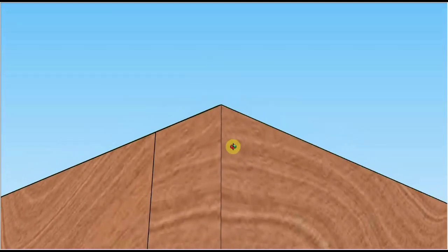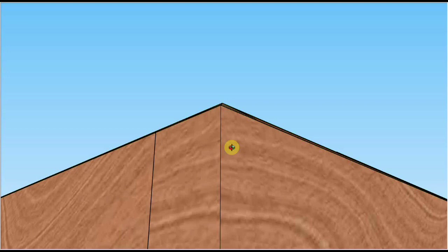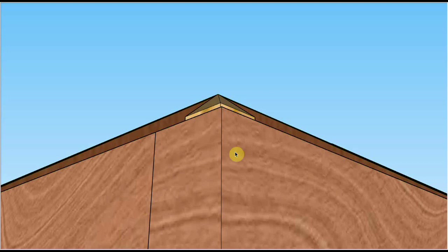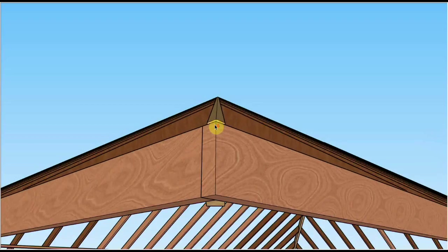A backed hip rafter looks really nice. The top edges are perfectly in plane with the rafters and with the fascia board. The problem is it all gets covered up with plywood later on in construction, so it's not typically done. It's just too much work. Dropping a hip rafter accomplishes the same thing and it's much quicker and easier to do.